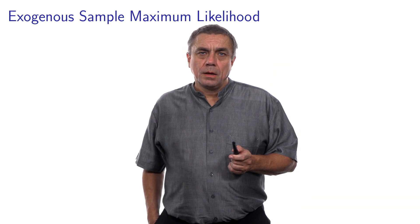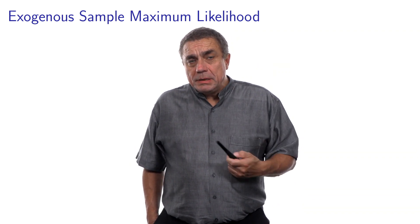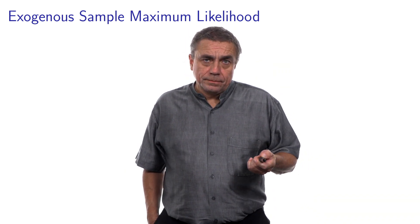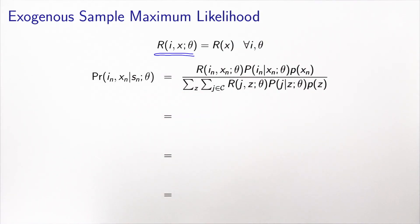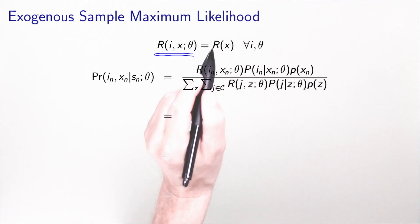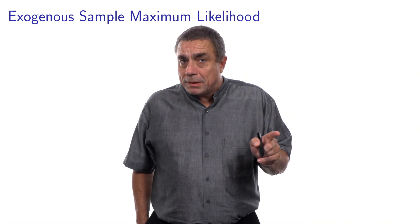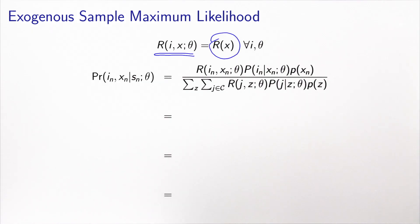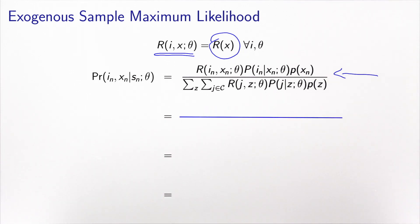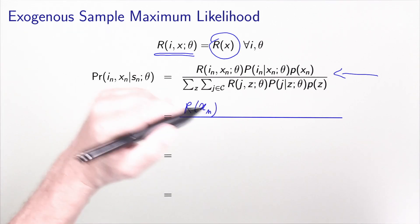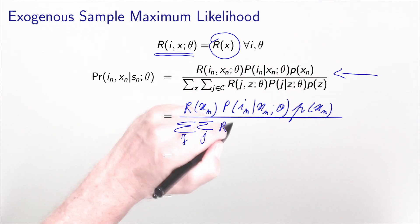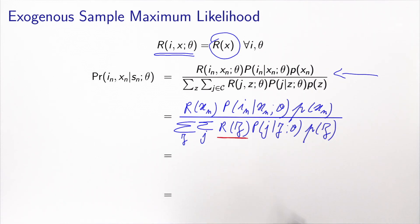The special case we will investigate first is where the sample has been collected using an exogenous sampling strategy, as introduced in the previous video. In this case, the probability to be in the sample does not depend on the choice i — it depends only on the explanatory variables x. And as we saw in the previous video, it is also independent from theta. So we replace R(i,x) by R(x). We can then see that this quantity does not depend on j, so it can go outside the sum.